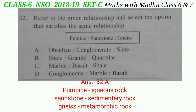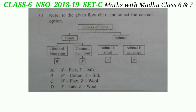Question 33: Refer to the given flowchart and select the correct option. Sources of fibers: plants — obtained from stem (W) and obtained from fruit (X); animals — animal is killed (Y) and animal is not killed (Z). According to the flowchart, W, X, Y, and Z could be flax or jute, cotton, silk, and wool respectively. The correct answer is option C — W is flax and Z is wool.